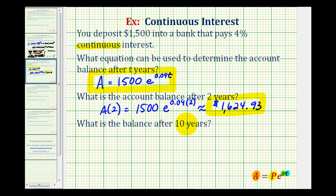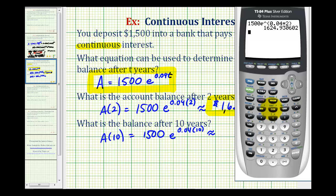To find the account balance after 10 years, we just substitute 10 for T. So A of 10 would be equal to 1,500 times E raised to the power of 0.04 times 10. So we can go back to the calculator and determine this value. Now the account balance would be $2,237 and approximately 74 cents.